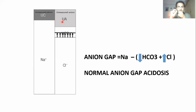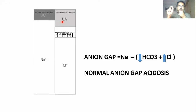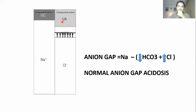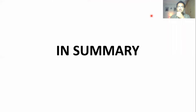The concept of anion gap gives us a great deal of information about the cause of metabolic acidosis. Whenever there is an increased anion gap, look for any cause in MUD PILES. Whenever there is a normal anion gap, look for any cause in HARD UPS. That's how we use anion gap in finding out the cause of metabolic acidosis.